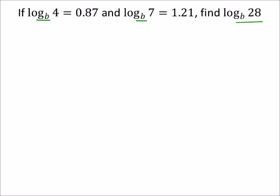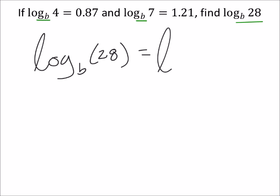Right here it gave us log base b of 28 and these are all log base b's, which means really the base doesn't matter. So 28, how is that related to 4 and 7? Well, you'd multiply them right. In other words, log base b of 28 I can change this to the log base b of I'm going to make this 4 times 7.